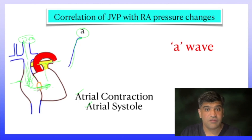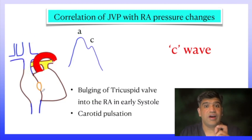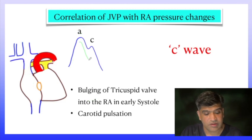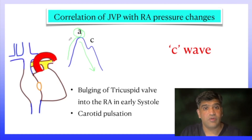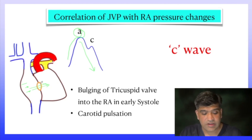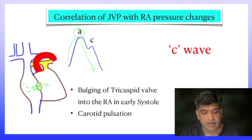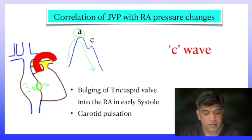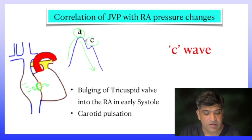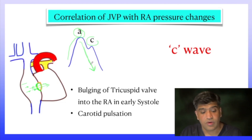After the RA has contracted and pushed blood into the RV, the RA will now relax — so the waveform comes down and the pressure falls. After the atrial contraction giving the positive A wave, the RA relaxes and the right ventricle goes into systole. When the RV contracts, it pushes the tricuspid valve slightly towards the RA — the tricuspid valve bulges into the RA in the early part of right ventricular systole. That bulging of the tricuspid valve gives us a small positive wave, which we call the C wave.